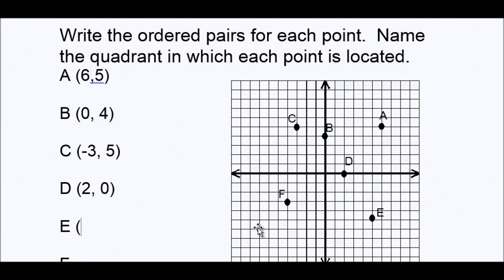What about point E? We start in the middle, go right: one, two, three, four, five. We went right, which is positive five. And then we went down: one, two, three, four, five. Down is negative. So your coordinates are (5, -5).